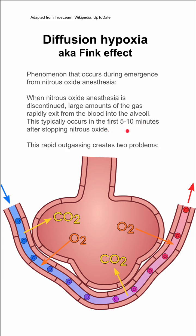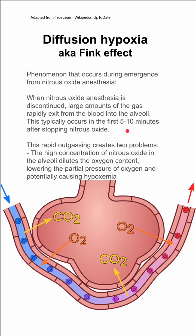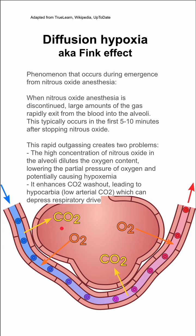This rapid outgassing creates two problems. You have a high concentration of nitrous oxide that results in the alveoli, which dilutes the available oxygen there. This lowers the partial pressure of oxygen and can potentially cause hypoxemia.